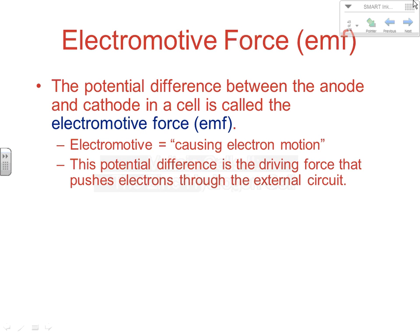First, we're going to talk about electromotive force, or EMF. The potential difference between the anode and the cathode — just like the potential difference between the top and bottom of a waterfall — deals with the energy involved in the redox reaction. This difference in potential energy between the anode and the cathode is known as the electromotive force, or EMF.